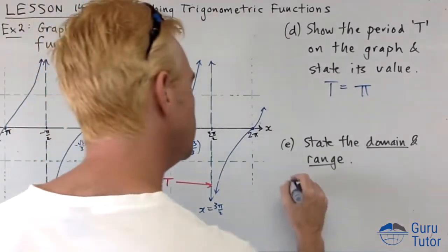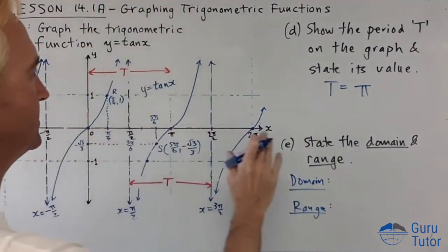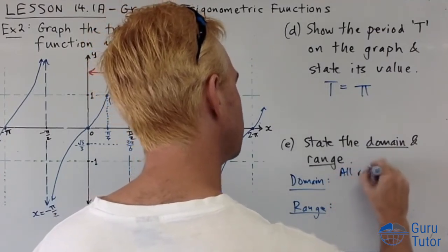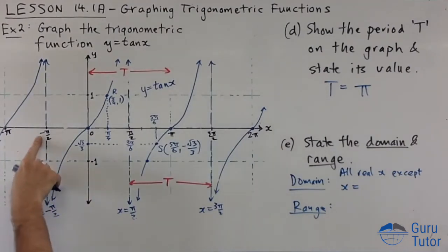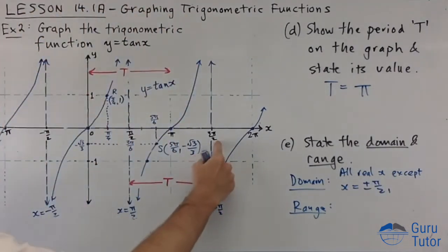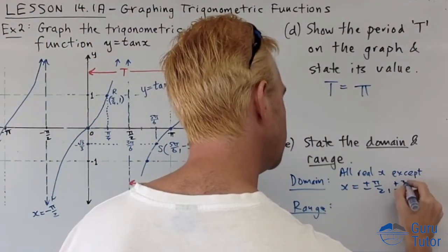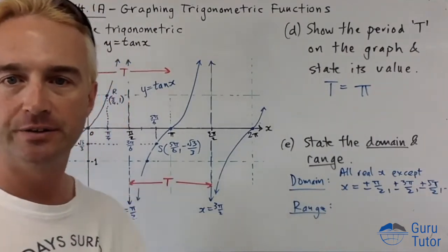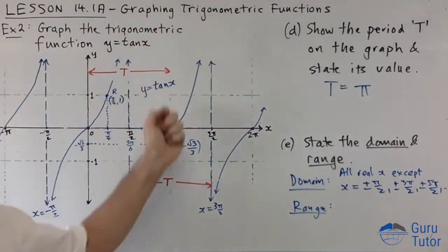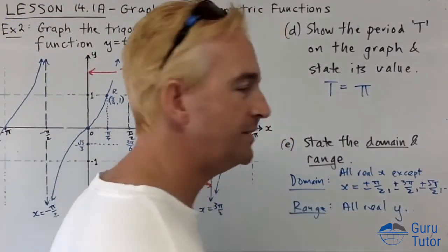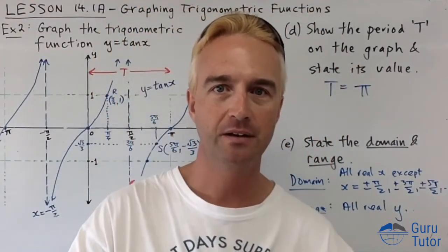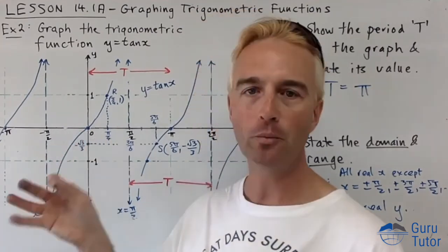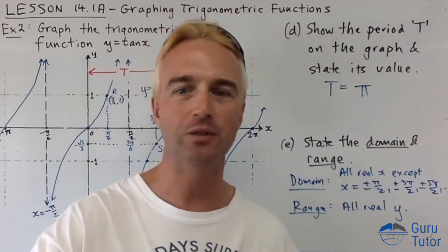Domain: all real x except the vertical asymptotes, so x ≠ ±π/2, ±3π/2, ±5π/2, and so on. Range: the graph goes up forever and down forever through zero, so the range is all real y. For homework, go through the same process for y = cos x, and then verify all graphs on Desmos or your GDC.